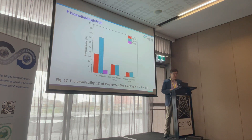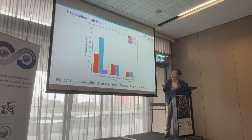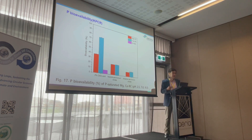We assessed phosphorus bioavailability using different methods. Calcium biochar gives the highest phosphorus bioavailability, followed by magnesium biochar in second place, while aluminum biochar gives the least bioavailability. So in terms of bioavailability, calcium and magnesium should be preferred.